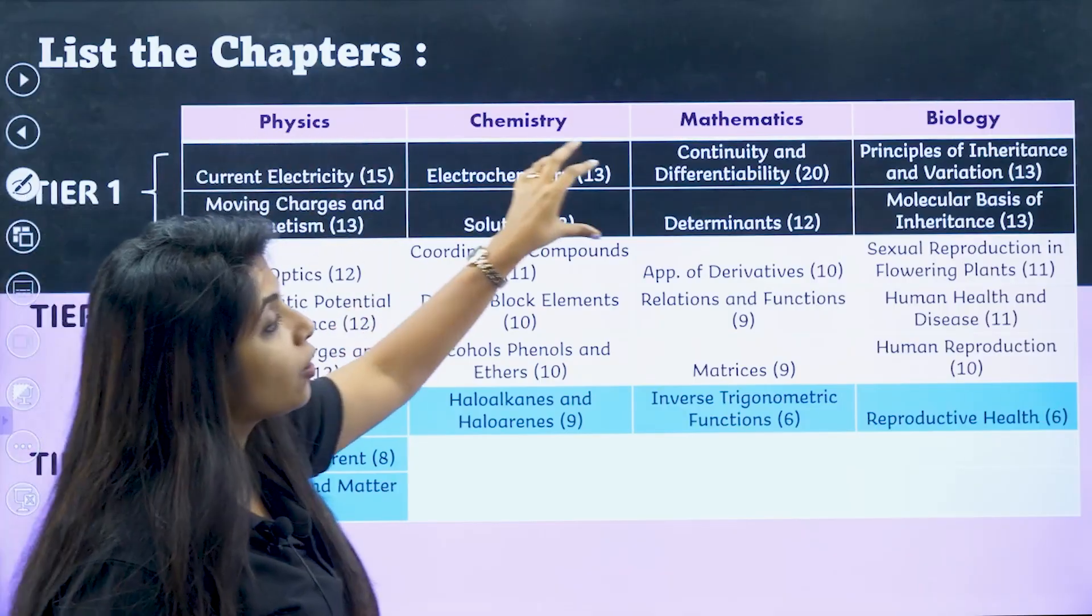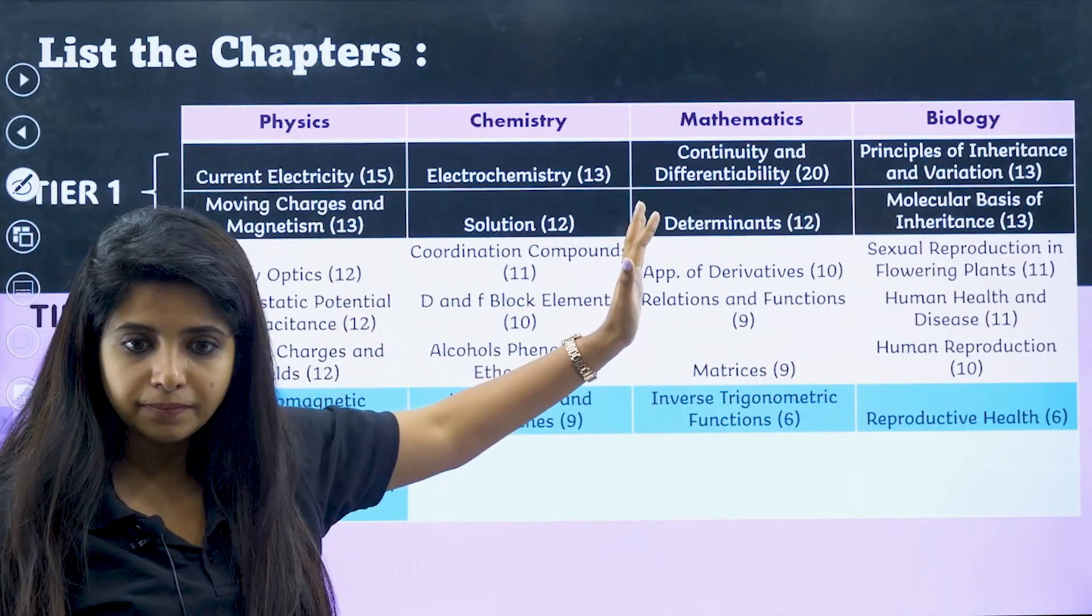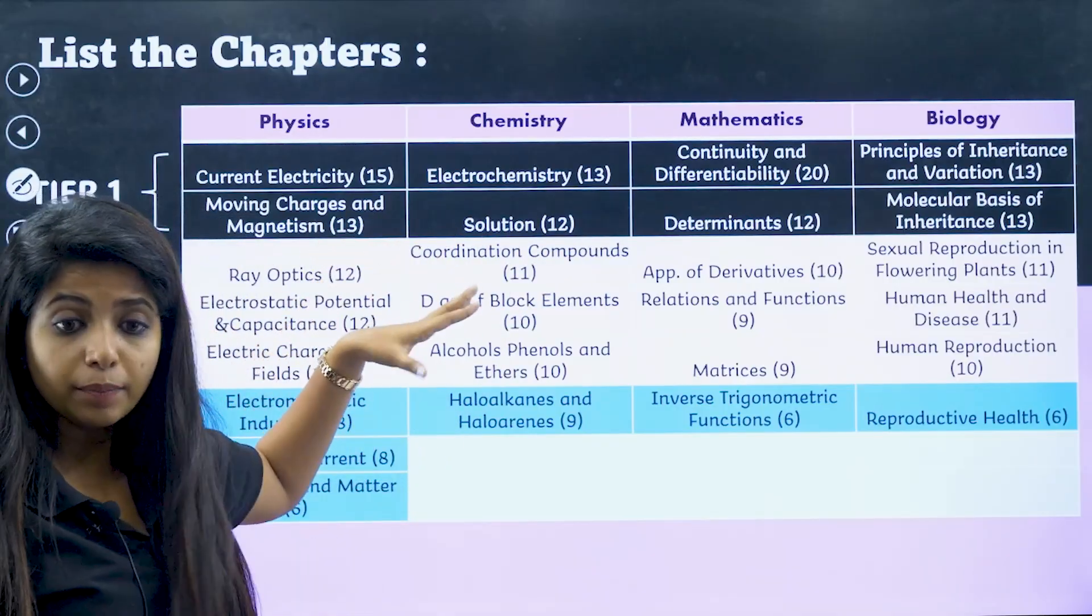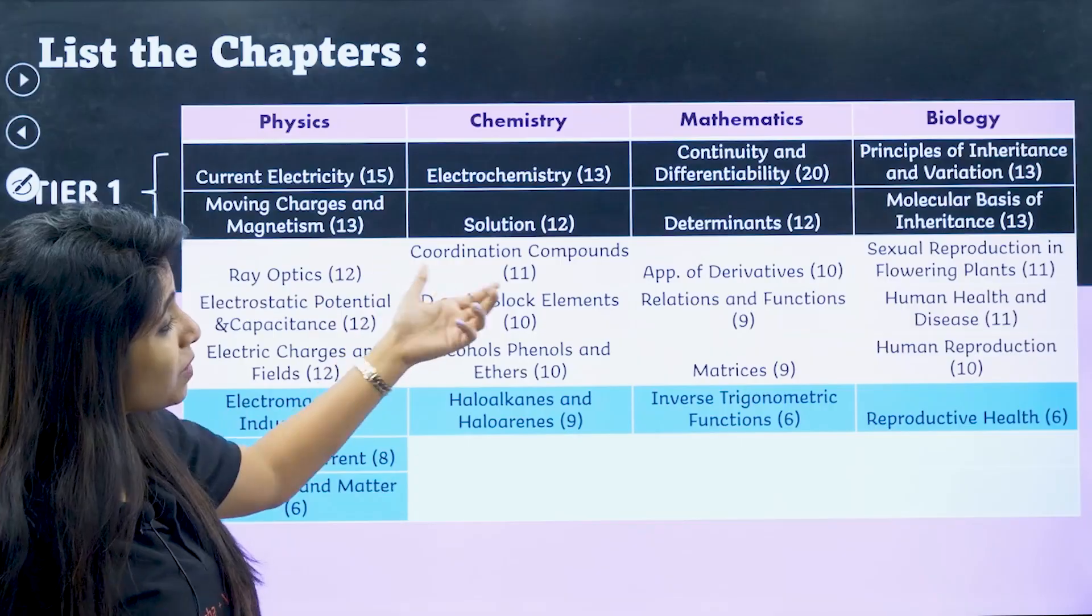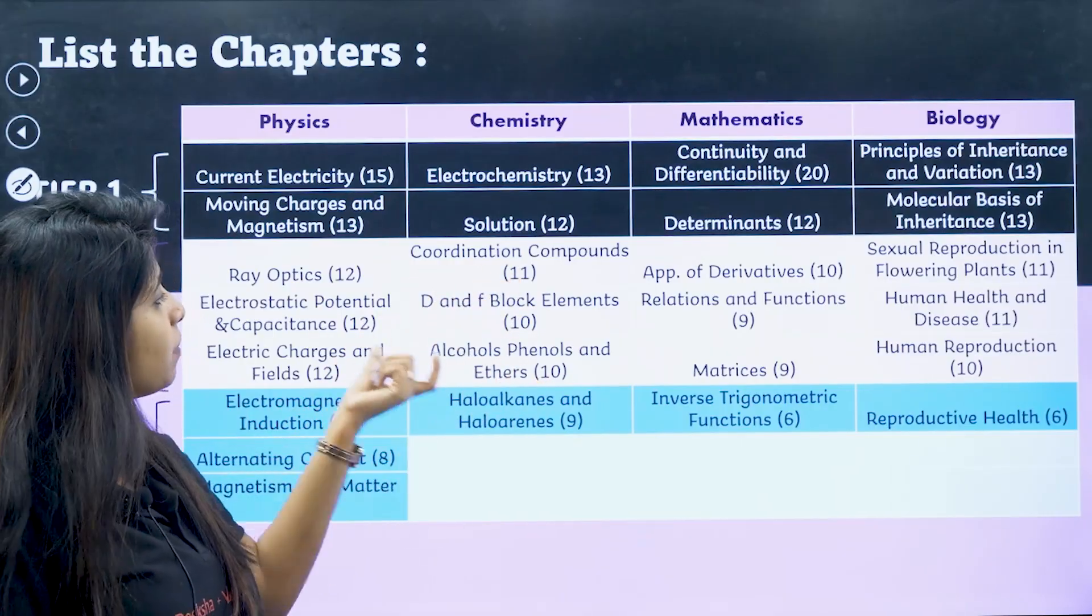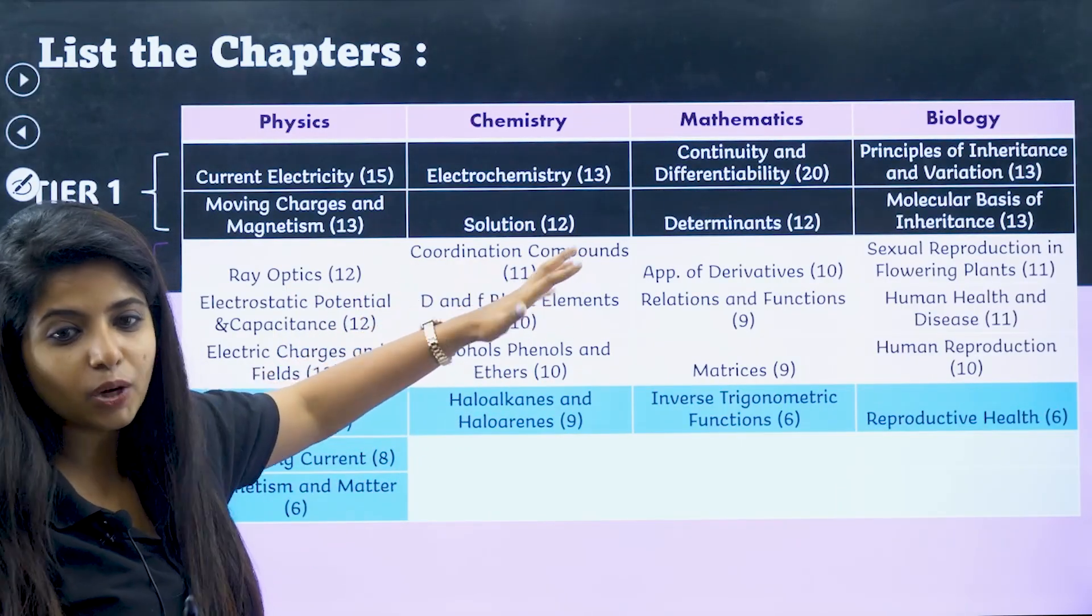Tier 1 are those chapters which are of very high weightage, gives you 13 marks, 20 marks, 15 marks and all of it. Tier 2 comes to be medium priority chapters, and Tier 3 is the low priority chapters. My medium priority chapters are itself 11 mark, 10 mark, 10 mark. So you understand that all of it are somewhere equal itself.